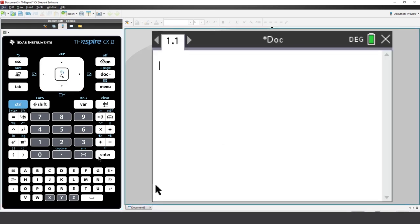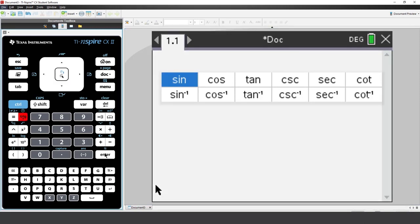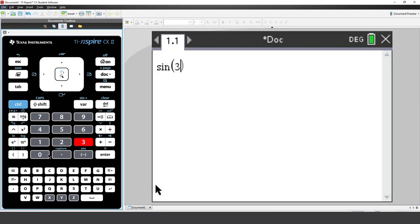Now that we've checked the settings, press the trig key. The first option is sine, so press enter. Type in 30, and then enter to execute the calculation.